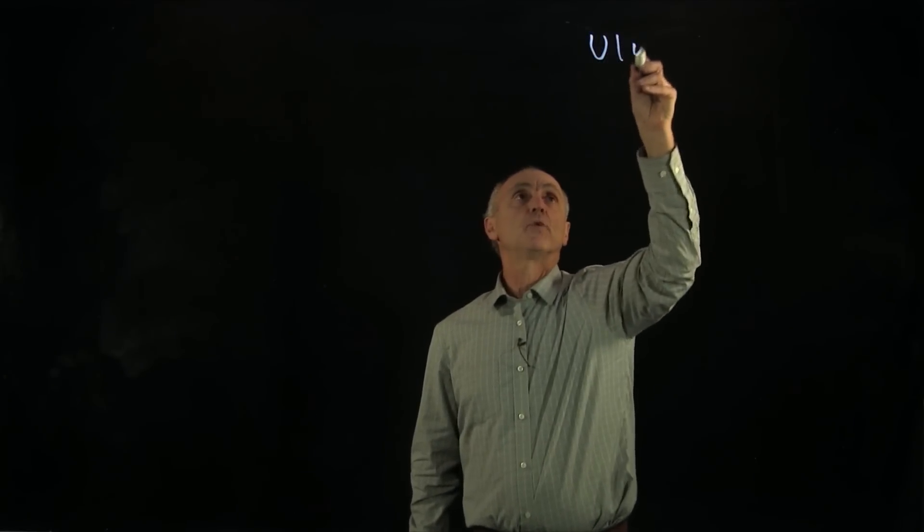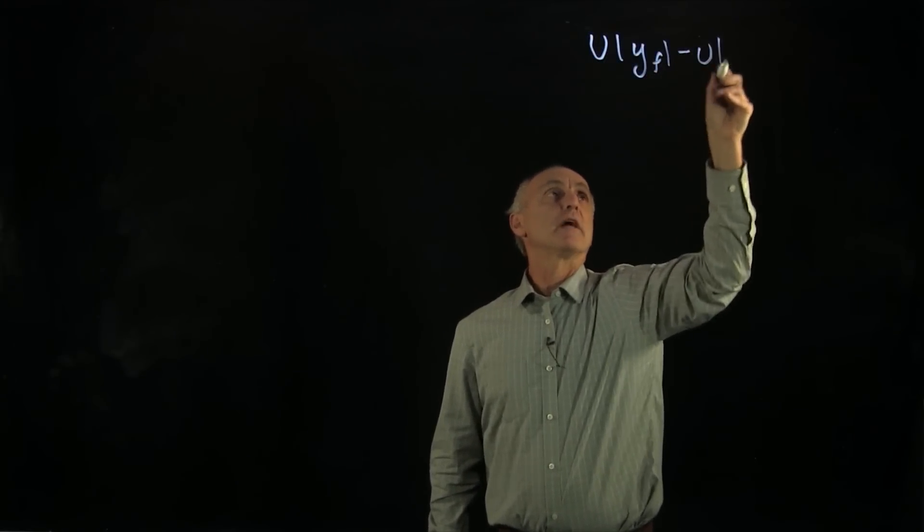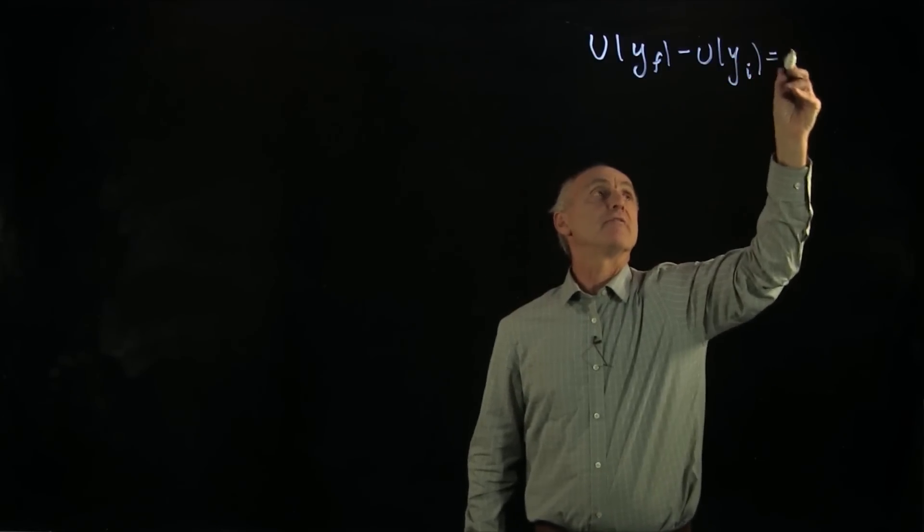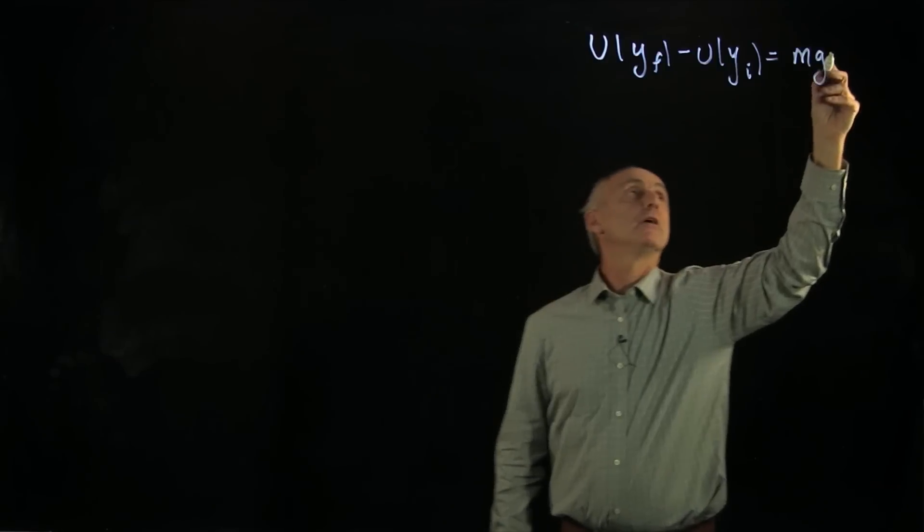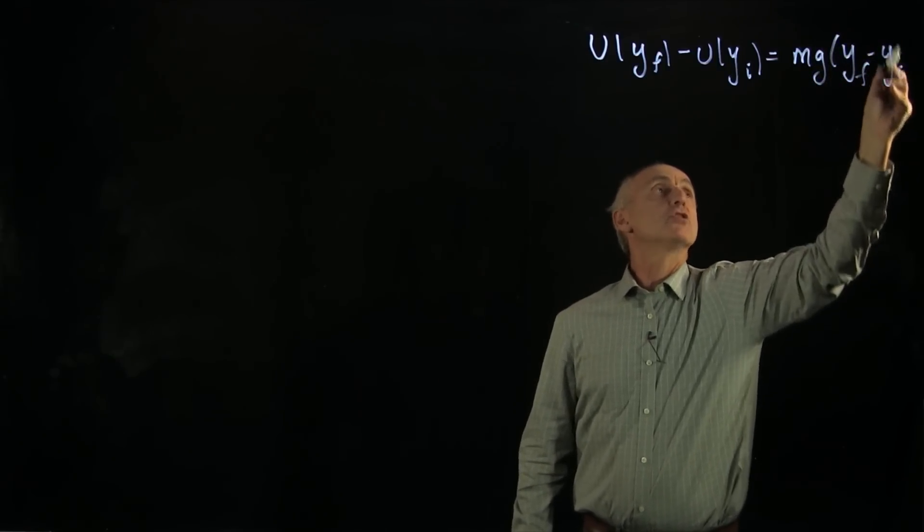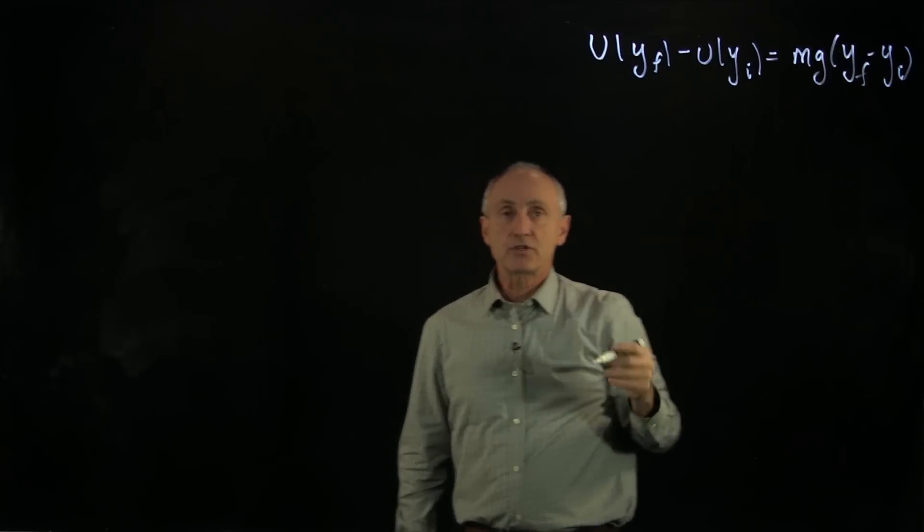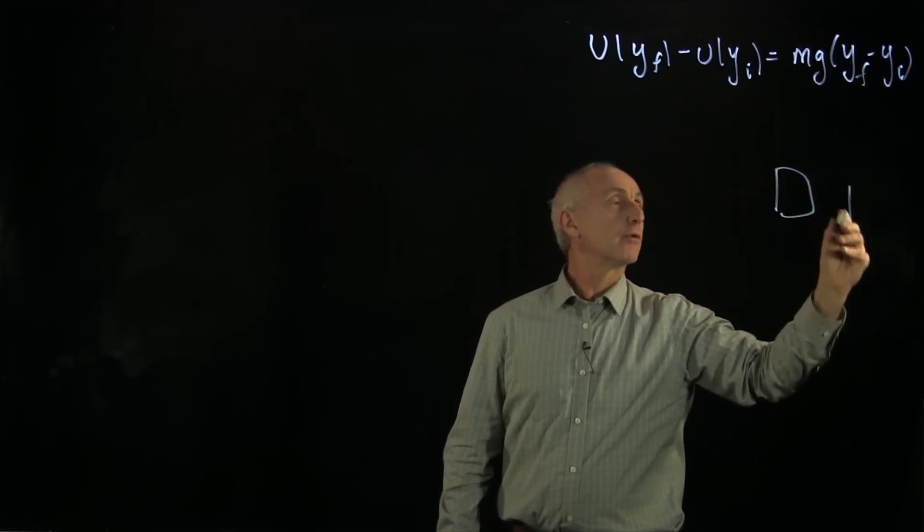Now that we've calculated the change in potential energy between some initial and final heights for the gravitational problem, mg of y final minus y initial, for this conservative force of gravity,